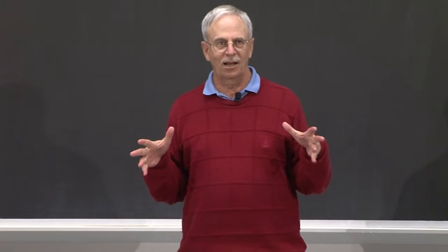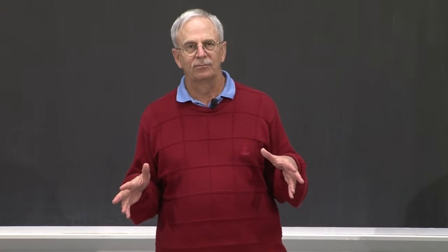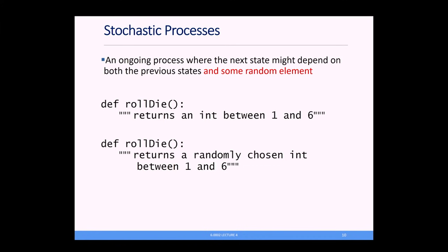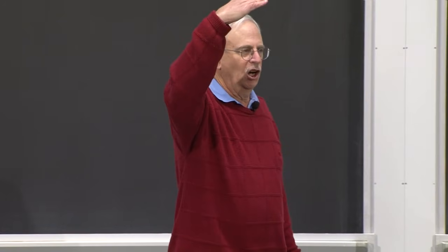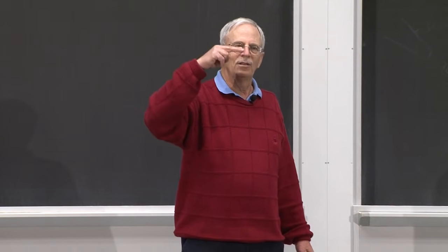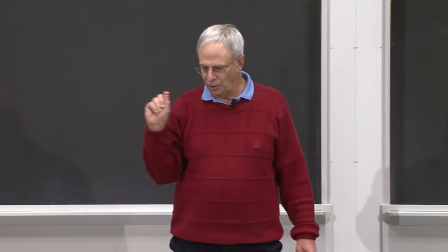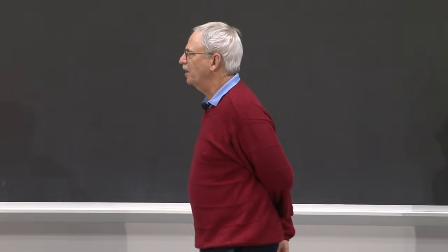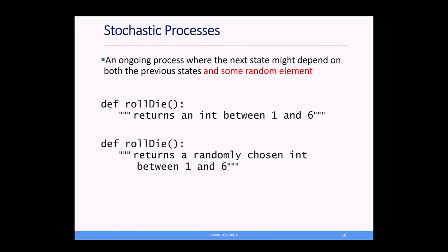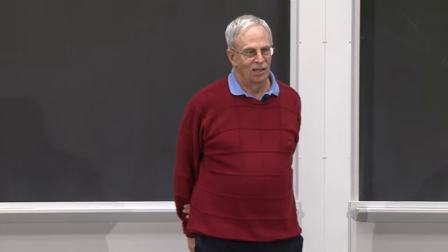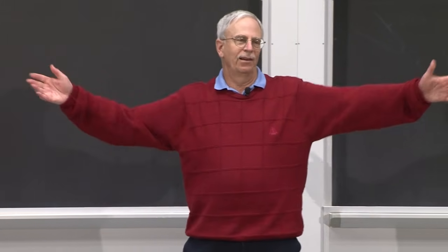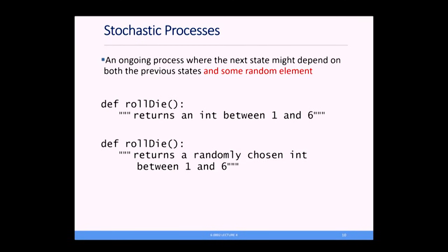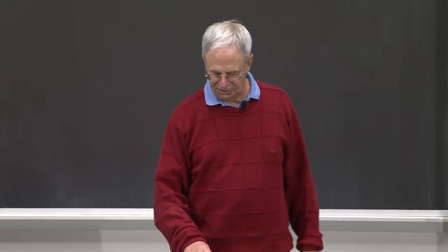When we think about non-determinism in computation, we use the word stochastic process — any process that's ongoing in which the next state depends upon the previous states and some random element. Up till now, when we've written code, what one line of code did depended only on what the previous lines did. There was no randomness. Here we're going to have randomness, and we can see the difference if we look at these two specifications of rolling a die.